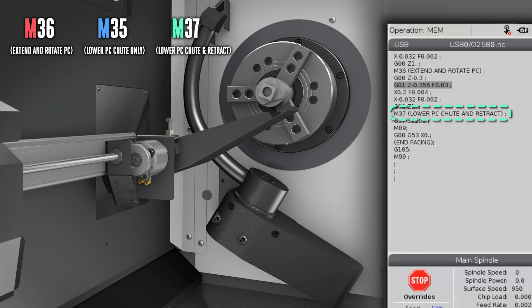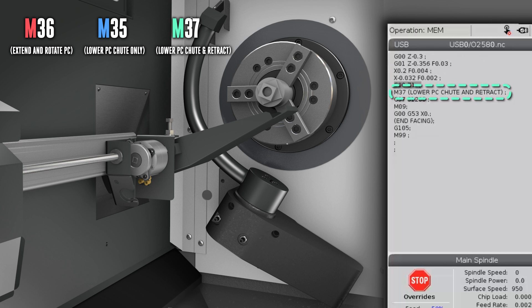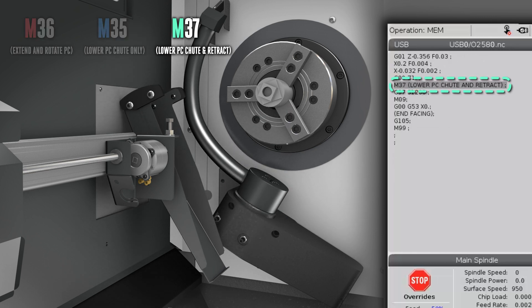When you are done with the parts catcher, place an M37 in your program to call it back to its stowed position.